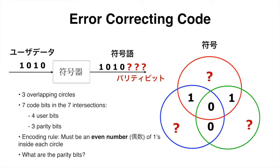How do we find the parity bit for the red circle? Since there are already two ones inside of the red circle and two is an even number, the parity bit is a zero. For the blue circle, there is only one one inside, so the parity bit must be a one so that there are an even number of ones inside the blue circle. Similarly for the green circle, and that's how a codeword is generated at the encoder side.